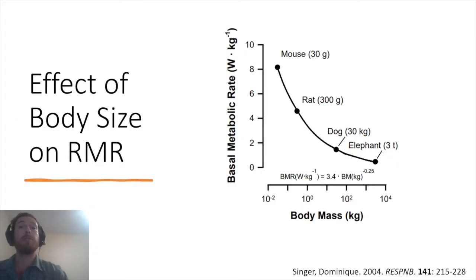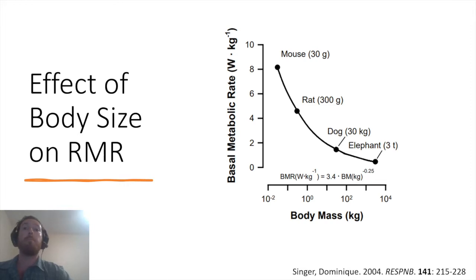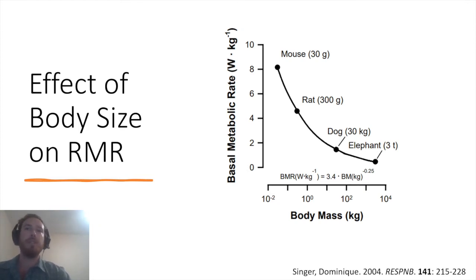One of the major determinants of resting metabolic rate is body size. Resting metabolic rate scales allometrically with body size, and one of the classic examples is to compare the RMR of an elephant and that of a mouse. While an elephant is much larger and overall needs much more energy, if you compare the mass-specific metabolic rates, a single gram of mouse tissue will require significantly more energy than a single gram of elephant tissue.